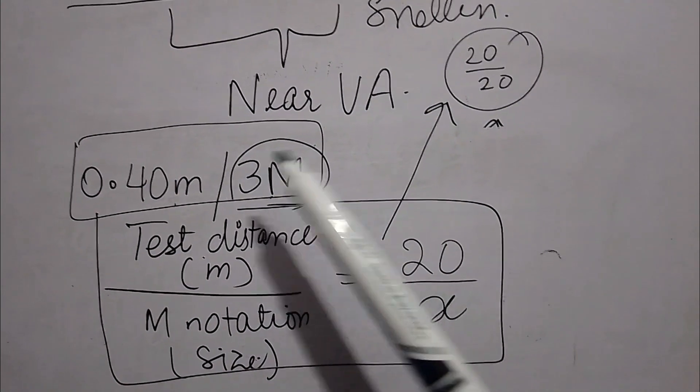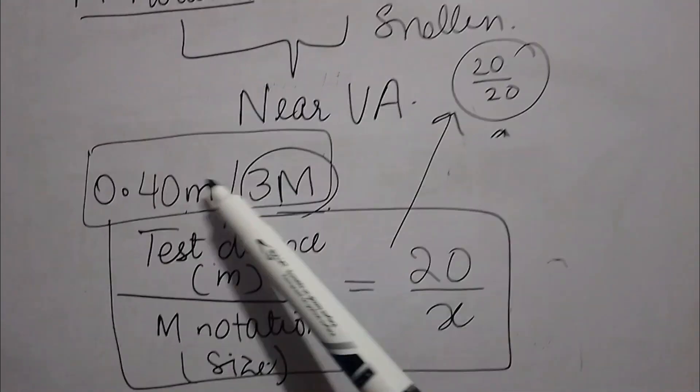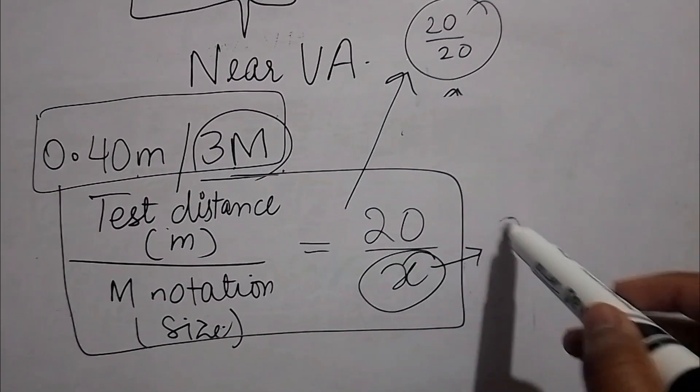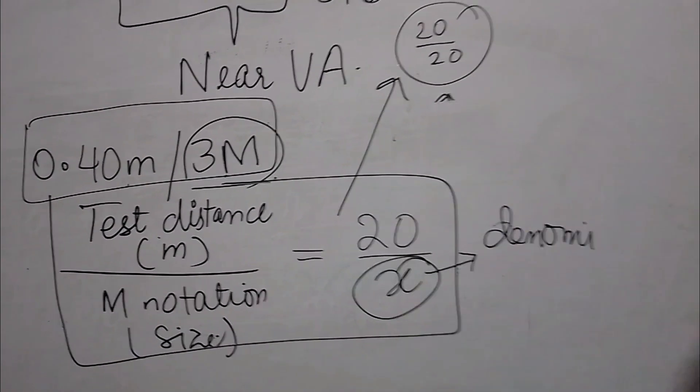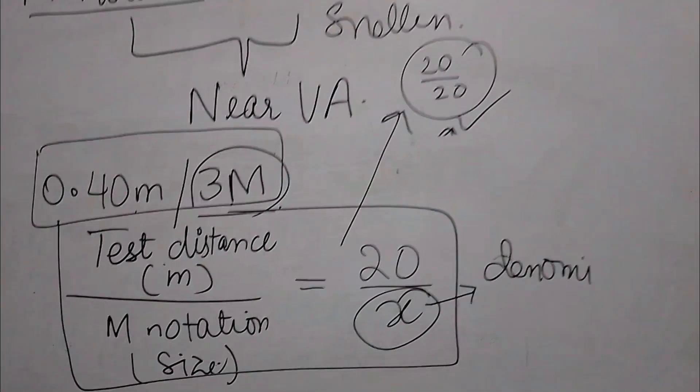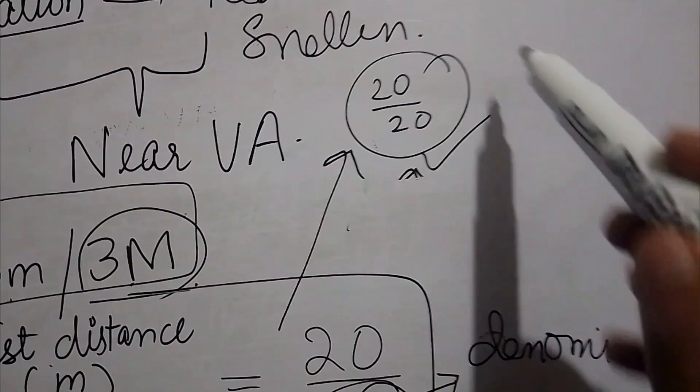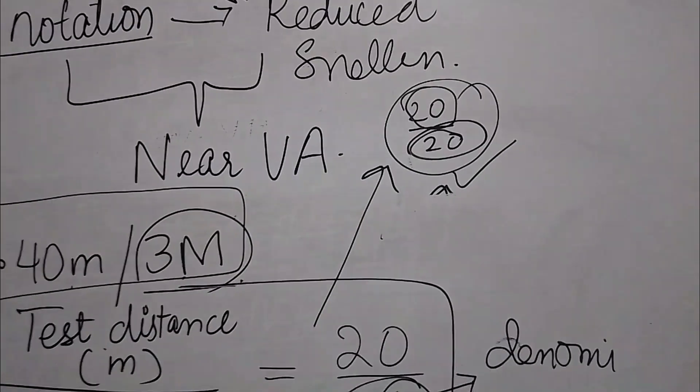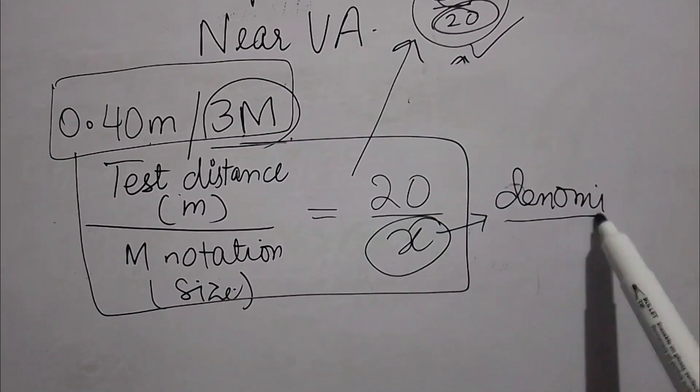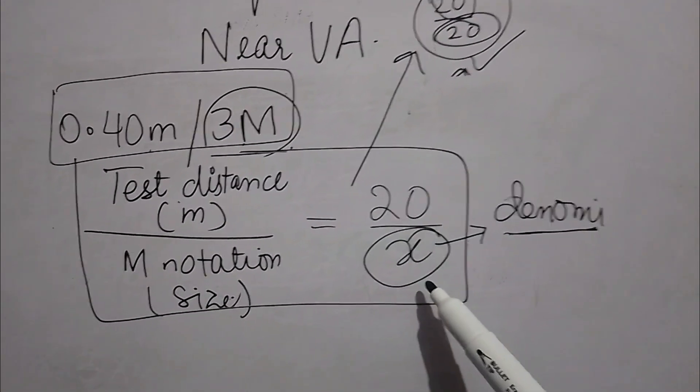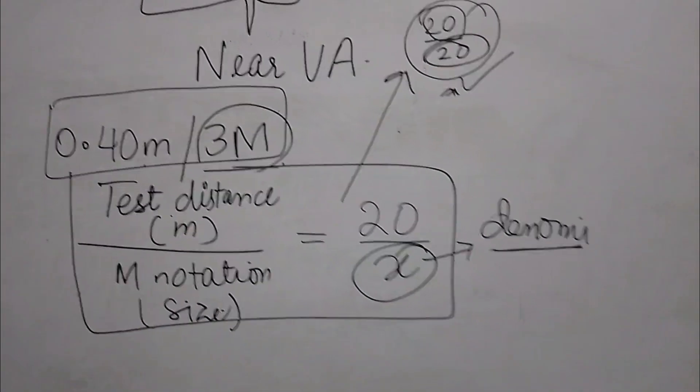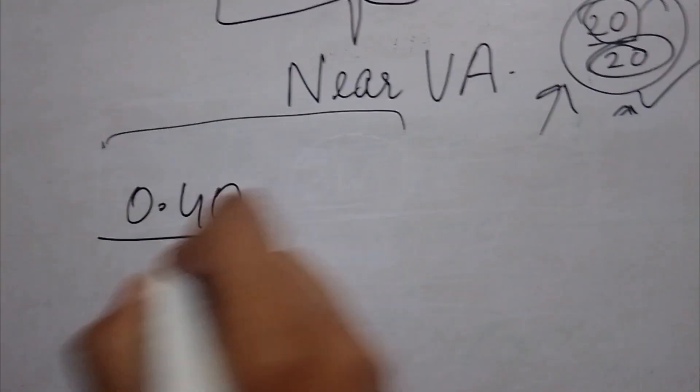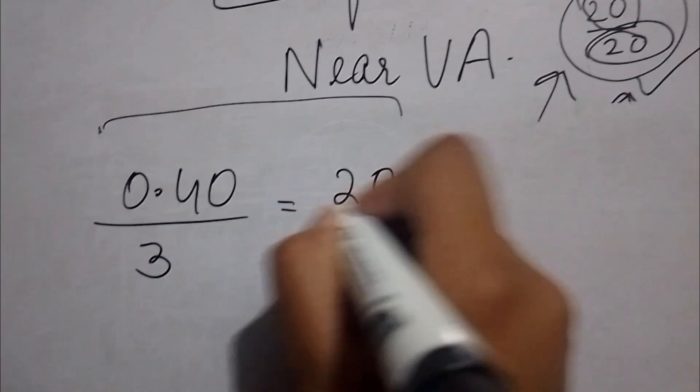If you want to convert it into the reduced Snellen format, you just need to equalize it with 20 by X, where X will tell you the denominator of the 20 by 20 format. Because we know that in 20 by 20, the numerator remains constant, but the denominator value changes. The denominator value is what we are going to calculate by this formula and it is represented with the help of X. I just have told you 0.40 over 3 equals to 20 over X.